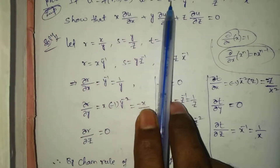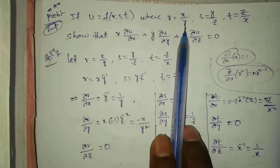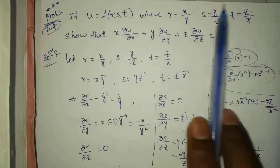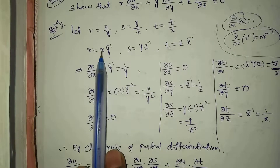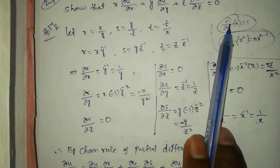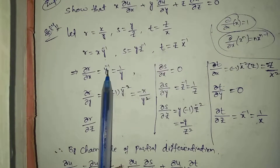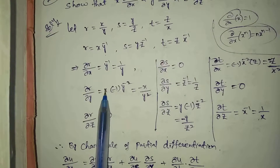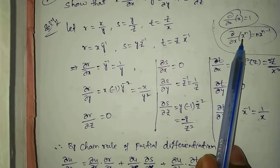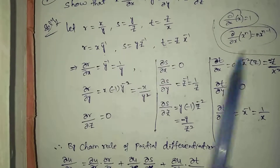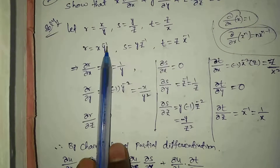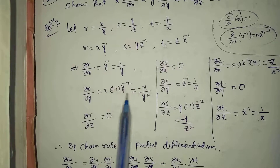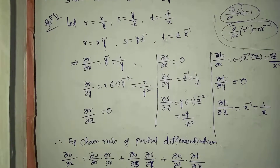Now we differentiate. We compute ∂r/∂x, ∂r/∂y, ∂r/∂z, ∂s/∂x, ∂s/∂y, ∂s/∂z, ∂t/∂x, ∂t/∂y, ∂t/∂z for three independent variables. Using the formula d/dx(xⁿ) = n·xⁿ⁻¹: ∂r/∂x = 1/y. For ∂r/∂y, x is constant outside; applying the power rule with y replaced, n = -1, giving power y⁻², so ∂r/∂y = -x/y². For ∂r/∂z, z is not involved so ∂r/∂z = 0.